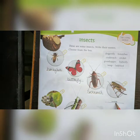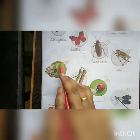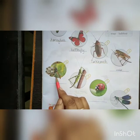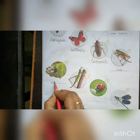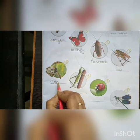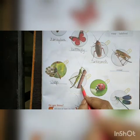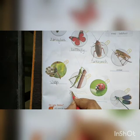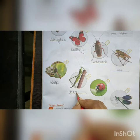Here, this is a cricket. Next insect — what is this? This is a wasp. And here, this is a grasshopper.